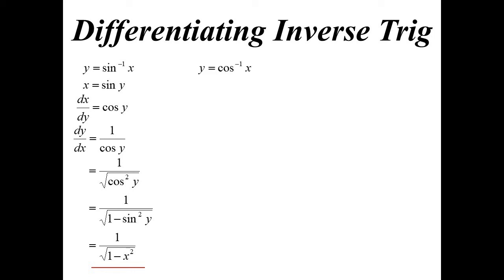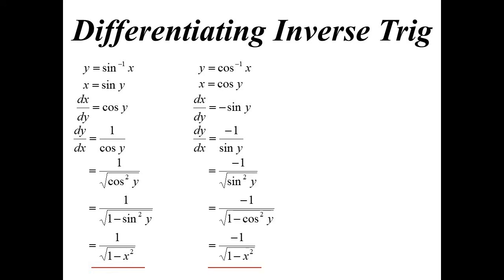For inverse cos, we can do a similar thing. We make x the subject, differentiate, and it becomes minus sine. To get x back in there, pretty much the same technique — we square root the square. Sine squared becomes 1 minus cos squared, so we get 1 minus cos squared. They're very similar, which makes sense because the sine curve and the cosine curve are also very similar functions.